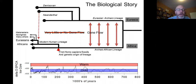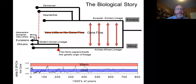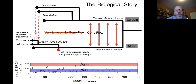That lineage radiates into all the many Eurasian ethno-linguistic groups we see today. The Melanesians — which include Aborigines and people from Papua New Guinea — as the group that led to them was crossing eastern Asia, they encountered Denisovans and interbred with them, picking up snippets of Denisovan DNA still present today.